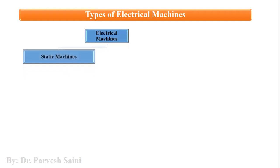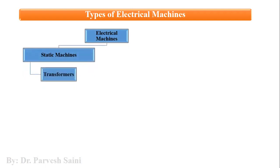Electrical machines are broadly classified as static machines. Static machines are those machines in which we do not have any moving part — for example, a transformer. A transformer does not move, does not rotate, and does not have any rotating or moving part. It is a static device placed at one point, working as an interface between the transmission and distribution circuit. On the primary side it is connected to the transmission line, and on the secondary side it is connected to the load or distribution side.